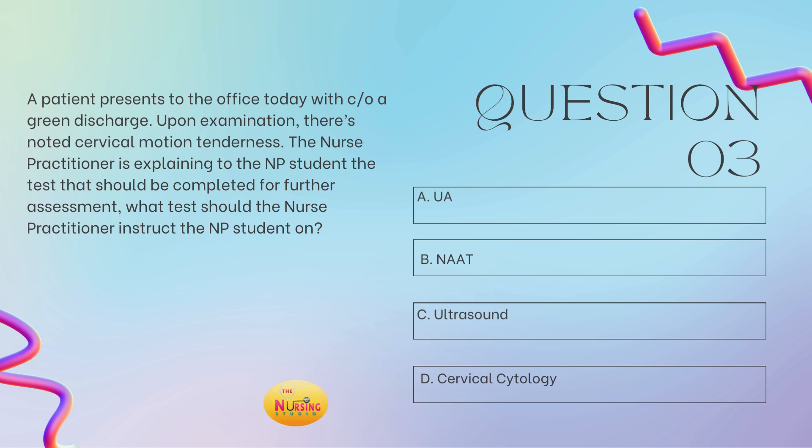Question number three: a patient presents to the office today with complaints of a green discharge. Upon examination, there's noted cervical motion tenderness. The nurse practitioner is explaining to the NP student the test that should be completed for further assessment. What test should the nurse practitioner instruct the NP student on? Is it A, a urinalysis; B, NAAT; C, ultrasound; or D, a cervical cytology? Take a moment and tell me what you got.